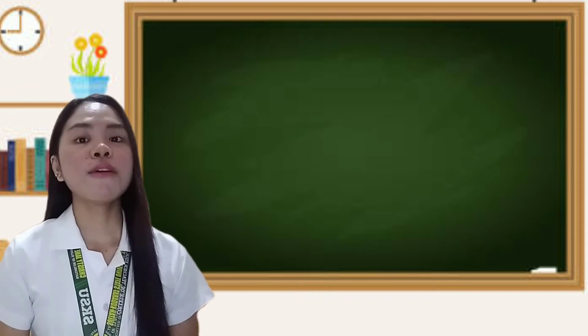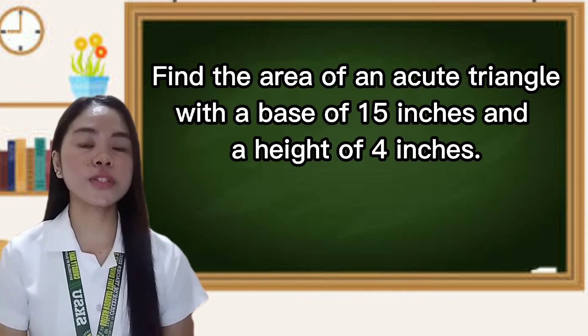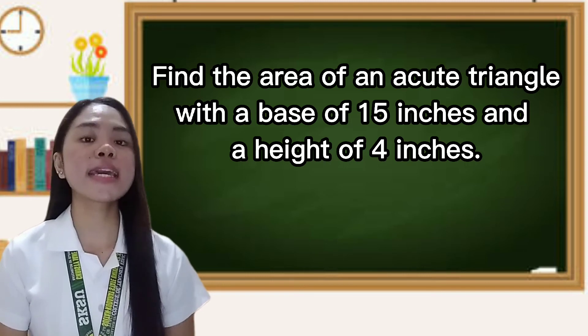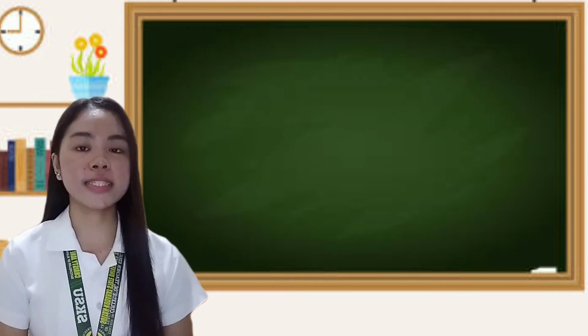Example number two: find the area of an acute triangle with a base of fifteen inches and a height of four inches.